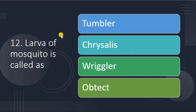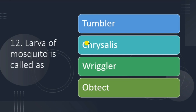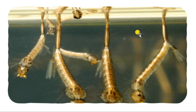Next question: the larva of mosquito is called what? The tumbler is the pupal stage of mosquito and is the only active pupa — unlike other holometabolous insects where the pupa is a resting period. Chrysalis is the pupa of butterflies, where the abdomen is attached to the substrate by the cremaster. The obtect pupa is the pupa of moths. The wriggler is the larva of mosquito.